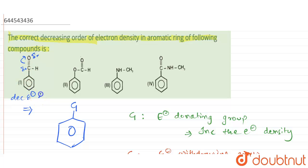If we consider the oxygen atom in the second compound, it has a lone pair of electrons. It can donate these electrons towards the benzene ring and therefore increases the electron density.